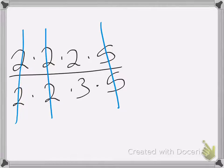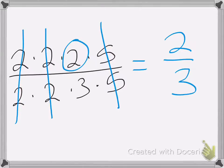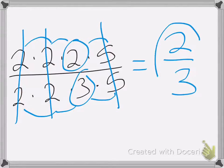So when I'm all finished, my answer is just 2 thirds, because 2 times 1 times 1 times 1 is just 2, and 3 times 1 times 1 times 1 is just 3. This makes it a lot easier if we cancel before we multiply.